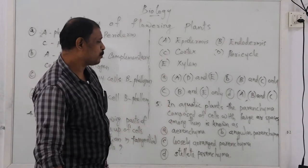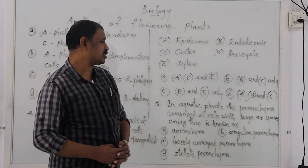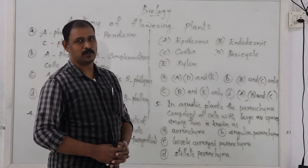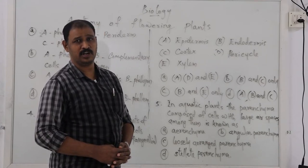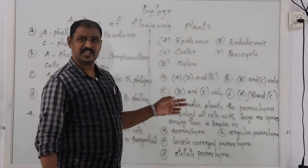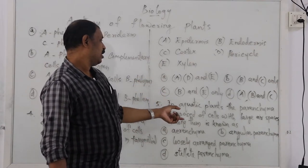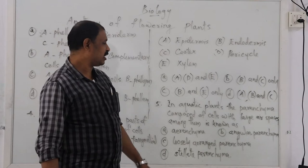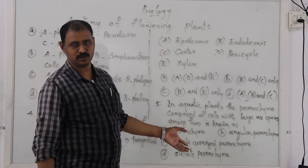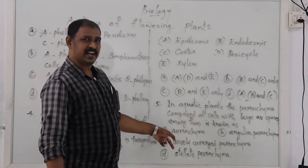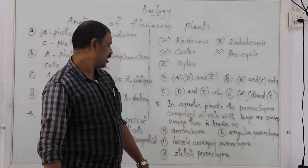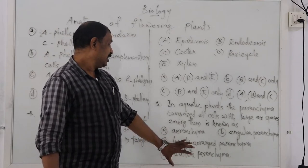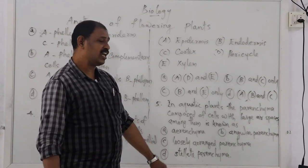In aquatic plants such as Vallisneria, Eichhornia, and Pistia, the parenchyma is composed of cells with large air spaces among them. This type of parenchyma with air-filled sacs or spaces is a specialized tissue. Options: A — angular parenchyma; C — loosely arranged parenchyma; D — stellate parenchyma.